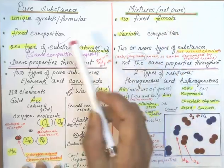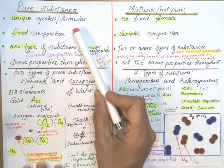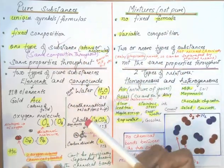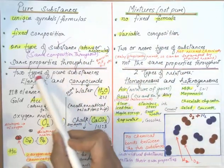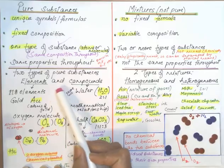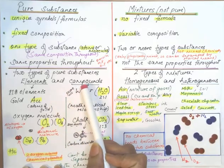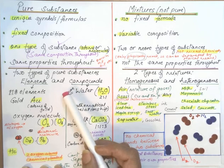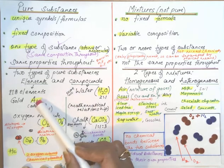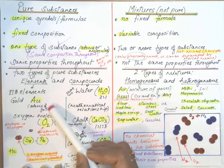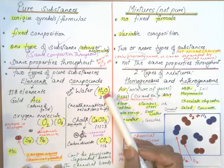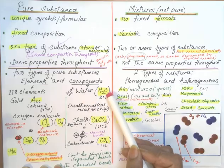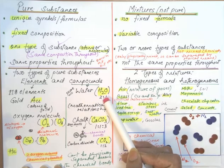Pure substances have symbols and formulas. The two types of pure substances are elements and compounds. For example, a pure element like gold is made up of only atoms of gold. Pure water is made up of only water molecules.